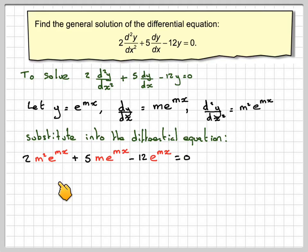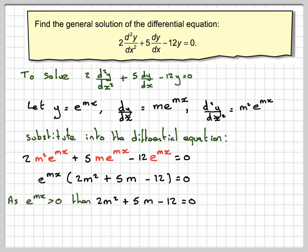Common factor of e to the mx, we'll take that out, and we're going to be left with 2m squared plus 5m minus 12 is equal to 0. e to the mx cannot be equal to 0, therefore 2m squared plus 5m minus 12 must be equal to 0. Remember, this is called the auxiliary equation.